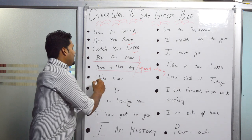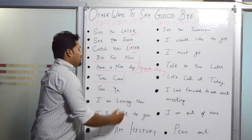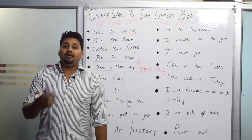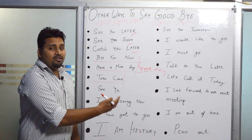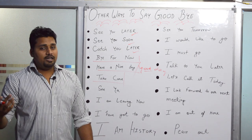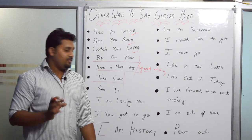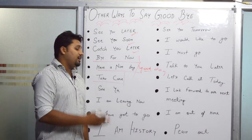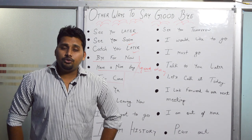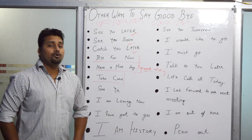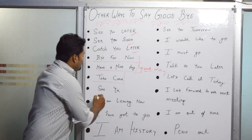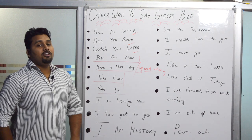Next is 'Take care.' It's a kind of formal way to say goodbye. For example, if someone is ill or sick, when you go to see them and say goodbye, you say 'Take care' instead of just 'Bye.' So 'Take care' is used when you are concerned about someone's wellbeing.